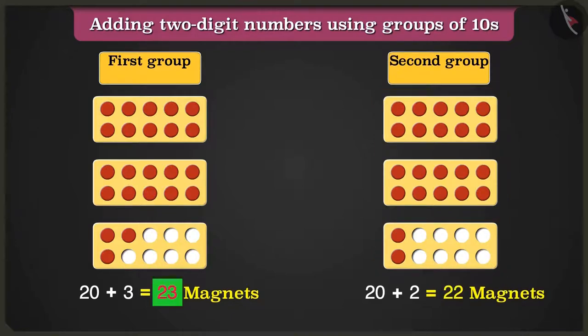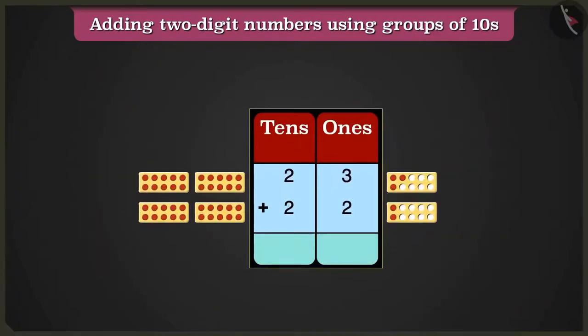Now, to add the numbers 23 and 22, we have to write them in the table of tens and ones. In the box of ones, we will add the numbers 3 and 2.